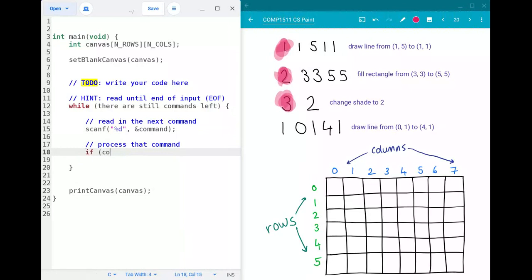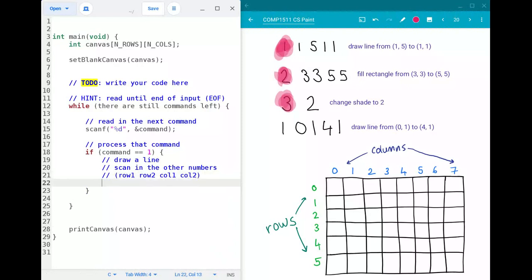So we could say something like if the command is equal to one we know one means this draw a line command over here so if it's one we know we want to draw. In order to actually draw the line you need to scan in the other four numbers the start row start col end row and col. I just write them as row one row two col one col two and then you want to actually use those to somehow go through your canvas and draw a line according to where those coordinates that you should draw it.